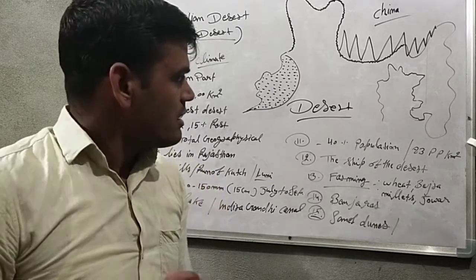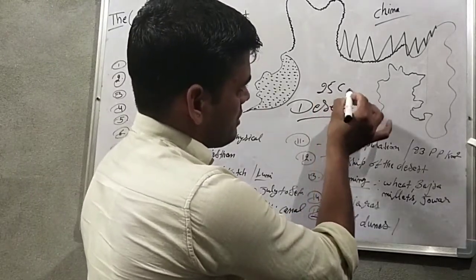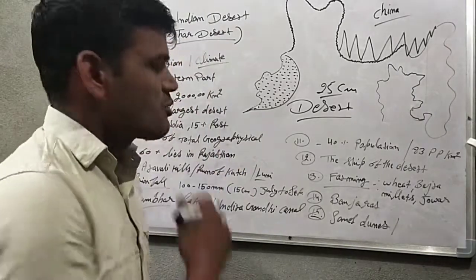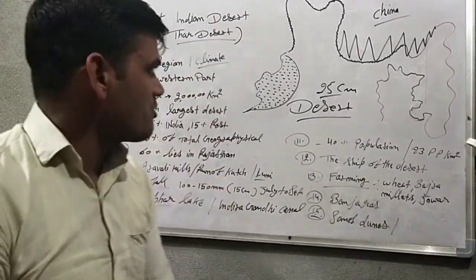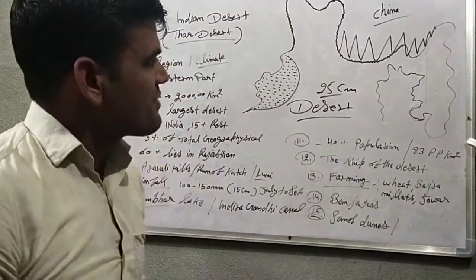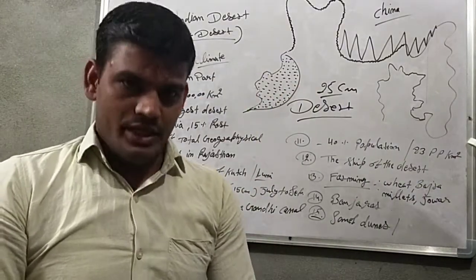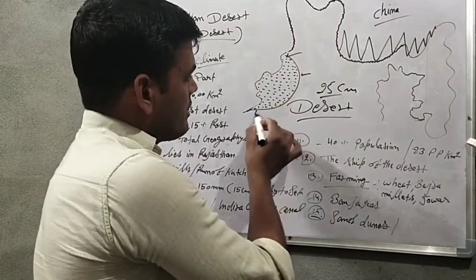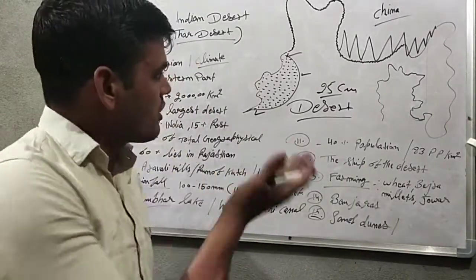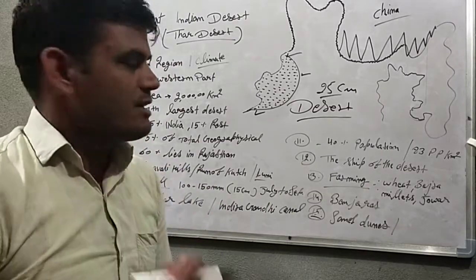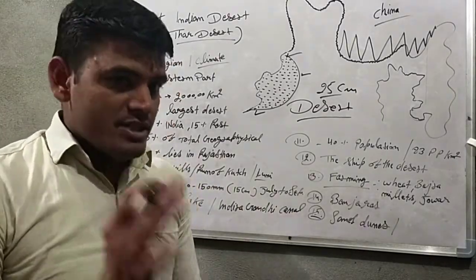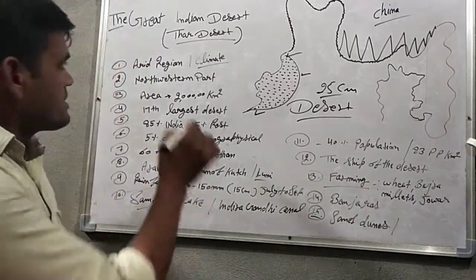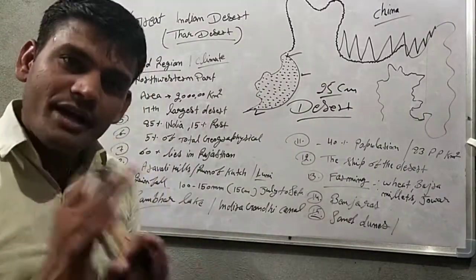First, we will discuss about the location of the Indian Desert. It is located in the northwestern part of India and lies in Punjab, Haryana, Rajasthan, and Gujarat. The border lies in Punjab, Haryana, and Rajasthan. The type of soil found there is sand. This region is an arid region — arid means dry areas.